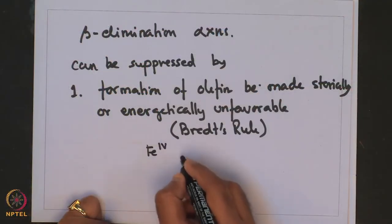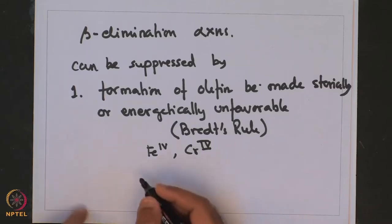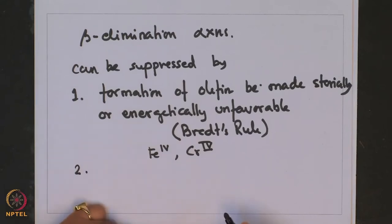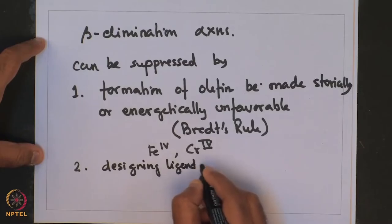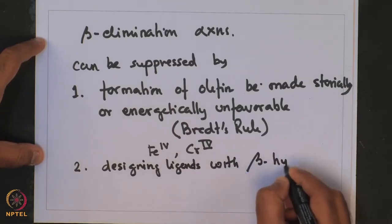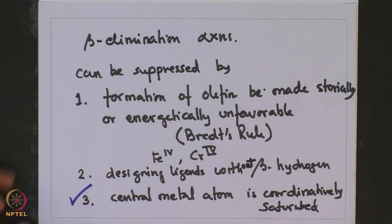The example of this is a norbornyl ligand, which does not undergo beta elimination even though there is a beta hydrogen at its beta carbon atom. We found this can be favorably used for stabilizing several high-valent oxidation states of metals — for example, iron(IV), chromium(IV) complexes, and several others which would otherwise be difficult to stabilize. We also discussed a string of ligands which do not have a beta hydrogen at the beta position and therefore do not undergo beta elimination. Designing ligands without beta hydrogen also suppresses beta elimination.